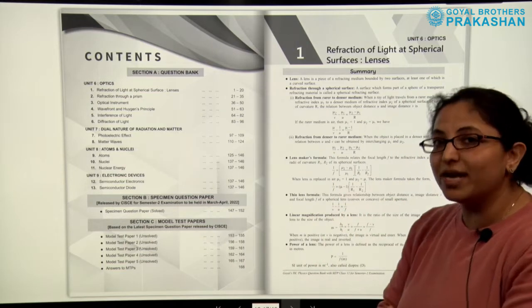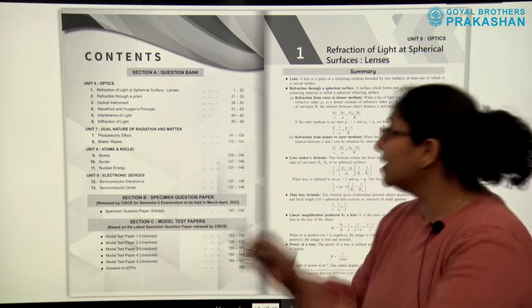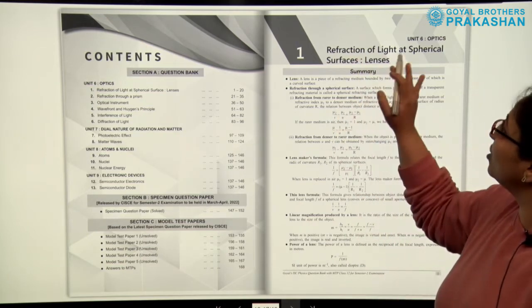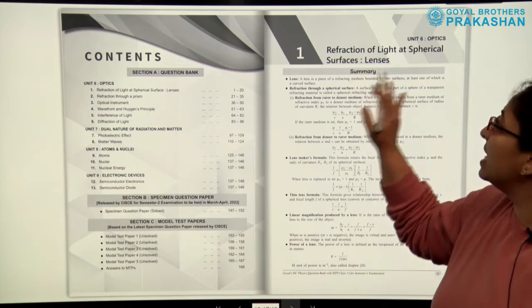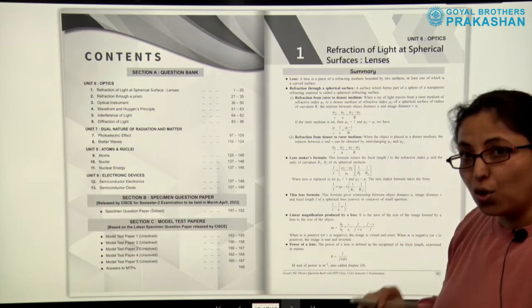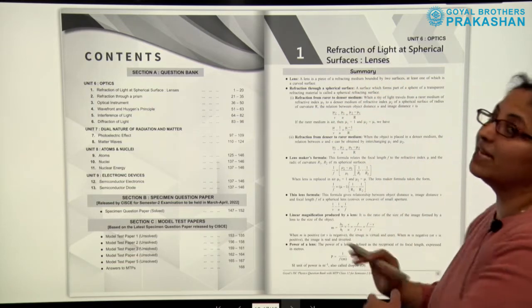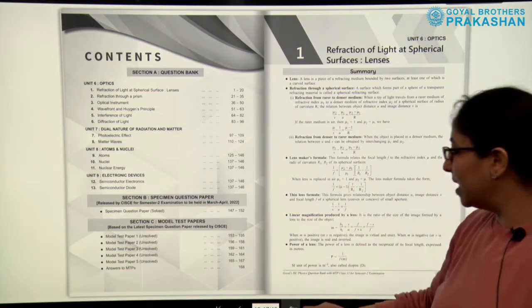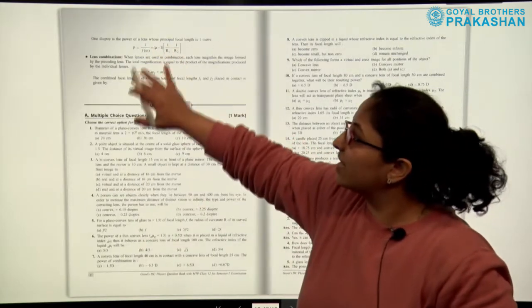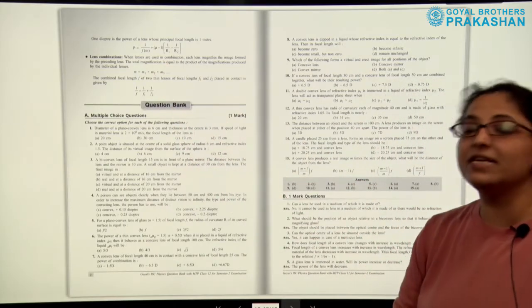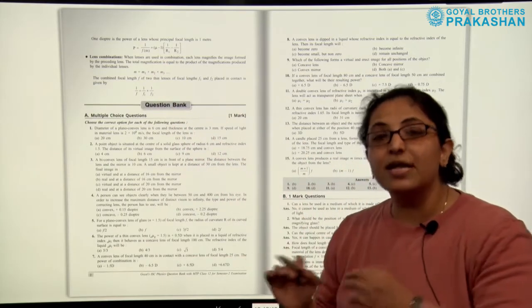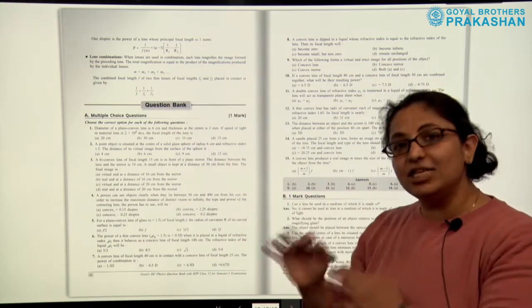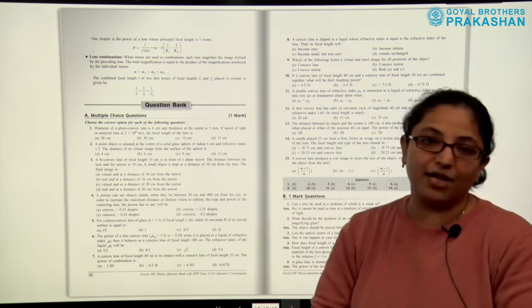Let us go through each unit individually. Section A starts with Chapter 1: Refraction of Light at Spherical Surfaces and Lenses. A summary is given at the start with all the important points, so the complete chapter can be revised in a very short time. The important points for each unit are provided at the beginning of each chapter.